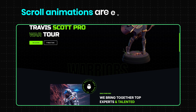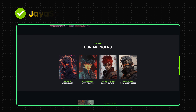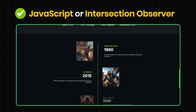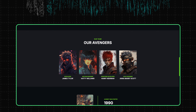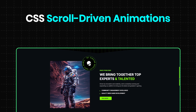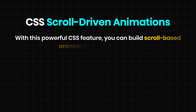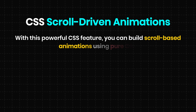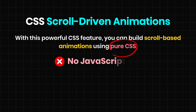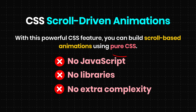Scroll animations are everywhere today. Usually, we rely on JavaScript or Intersection Observer to build them. But now, CSS scroll-driven animations change everything. With this powerful CSS feature, you can build scroll-based animations using pure CSS — no JavaScript, no libraries, no extra complexity.